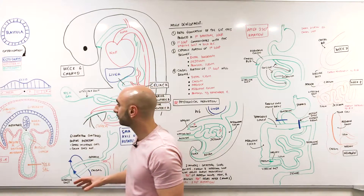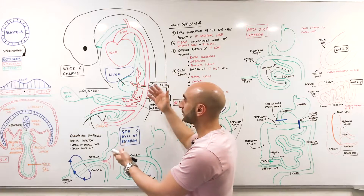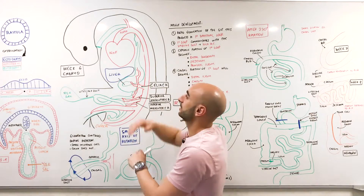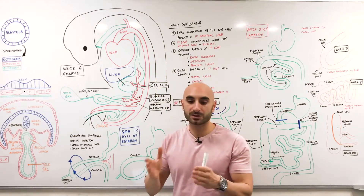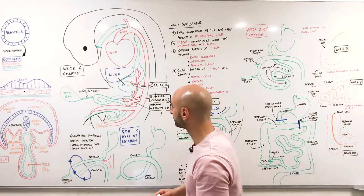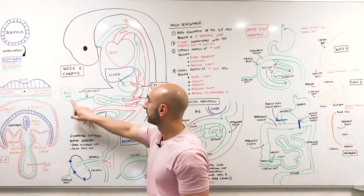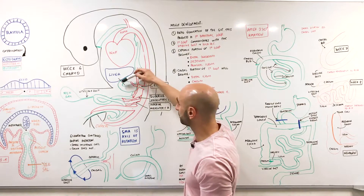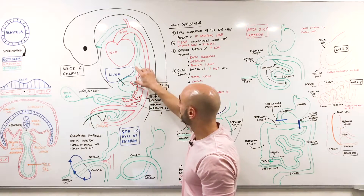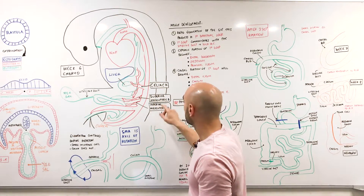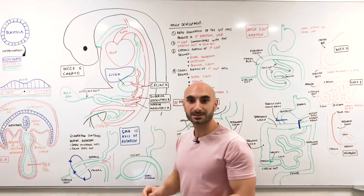Let's have a look at this week six embryo. The development of the GIT is continuing. Here's the heart and the aorta, and the blood supply of the GIT is drawn in. It's important to know the divisions of the GIT because there is a different blood supply for each one. We have the liver, the stomach, the duodenum, the loops, and the cloaca. The yolk sac is connected to the midgut through a vitelline duct. The foregut is supplied by the celiac artery, the midgut is supplied by the superior mesenteric artery, and the hindgut is supplied by the inferior mesenteric artery.